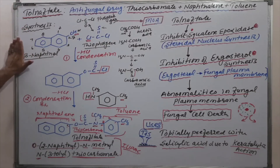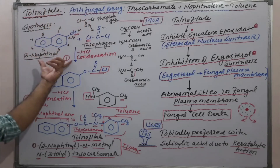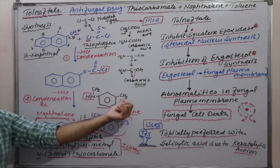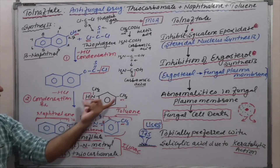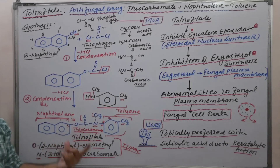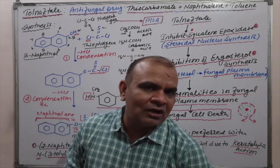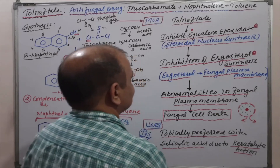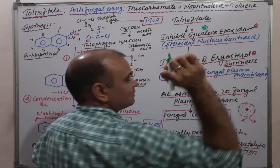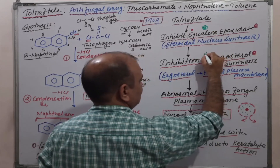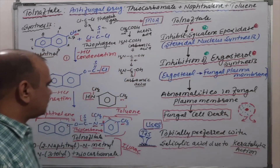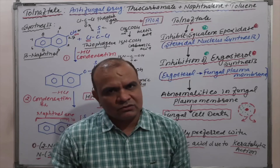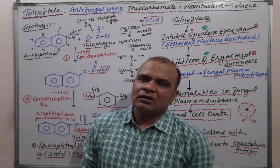In synthesis, beta-naphthol and thiophosgene undergo a condensation reaction to form a derivative, which is then condensed with the N-methyl aniline (toluene) derivative. This results in thiocarbonate formation — that is the tolnaftate molecule. During competitive exams, questions can focus on the mechanism — squalene epoxidase enzyme and inhibition of ergosterol. The synthesis can also be asked as a subjective question in university exams.